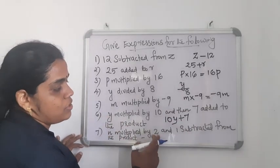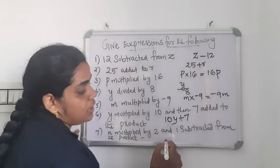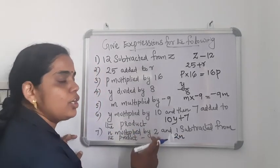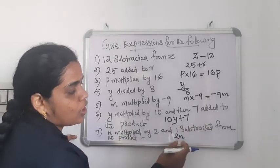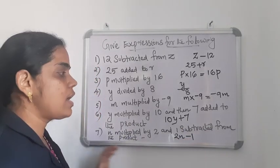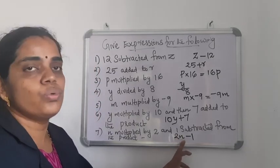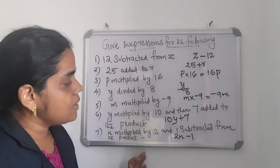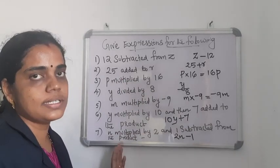N multiplied by 2 means N into 2, which is 2N. And 1 subtracted from the product — the product is 2N, and we subtract 1. So the expression is 2N minus 1. I hope it is clear how to convert a statement into an expression.